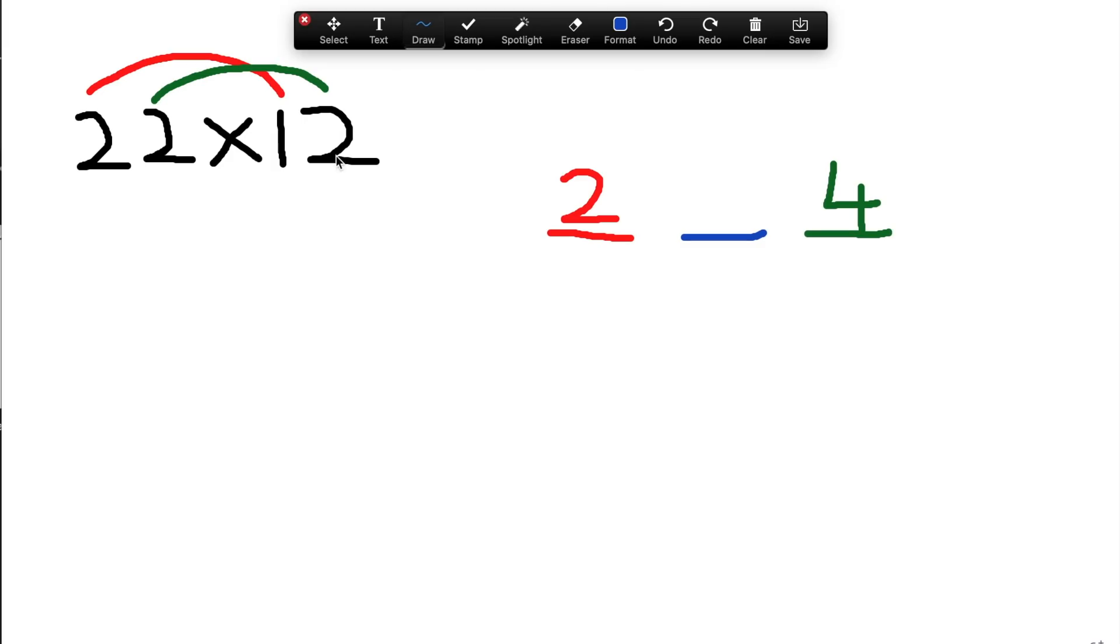And now the middle blank is the sum of the multiplication of the last 2 numbers. Let's start with these two numbers and these two numbers. 2 times 1 is 2, and 2 times 2 is 4. So 2 plus 4 is 6. And that's it. And that's your answer. 22 multiplied by 12 is 264. Isn't that super simple and super fast?